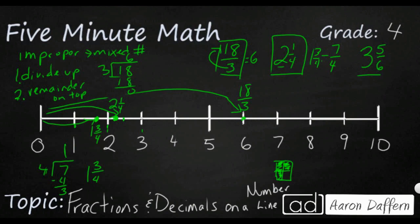Finally, let's look at 3 and 5 sixths. It is going to be between 3 and 4. But that 5 sixths is almost our next whole number 4. So I'm going to put that basically right next to my 4. And we're just going to call that 3 and 5 sixths.